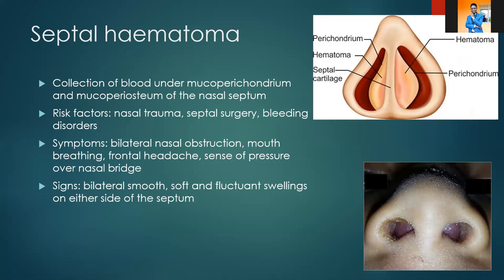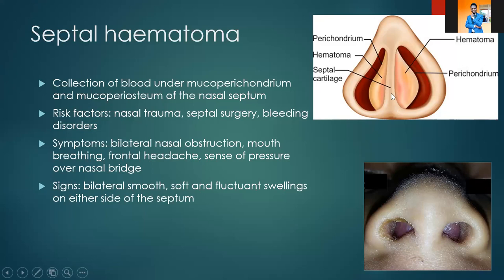Now we are going to look at septal hematoma and septal abscess. A septal hematoma is a collection of blood between the mucopericondrium and the mucoperosteum of the septum. The nasal septum has both a cartilaginous part and a bony component, covered by the mucopericondrium and mucoperosteum respectively. Risk factors include nasal trauma, septal surgery, or bleeding disorders, which lead to collection of blood between this layer and the septal cartilage.